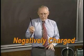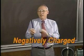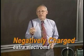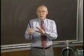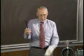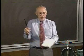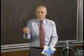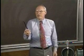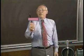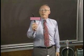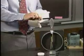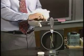By this rubbing process, the rod has acquired extra electrons. It got those extra electrons from the cat fur, which now has too few, and is positively charged. In any case, we've got the electrons on the rod, and we're going to put them on this little device called an electroscope.